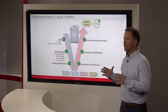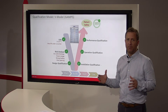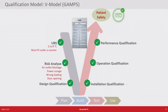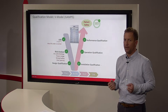The risk analysis is simple because it is used in a room temperature environment. Risks would include things like the air outlet being blocked, power being out, wrong loading, or — most importantly — door openings.